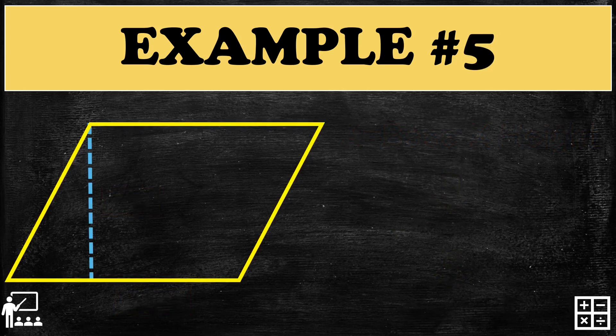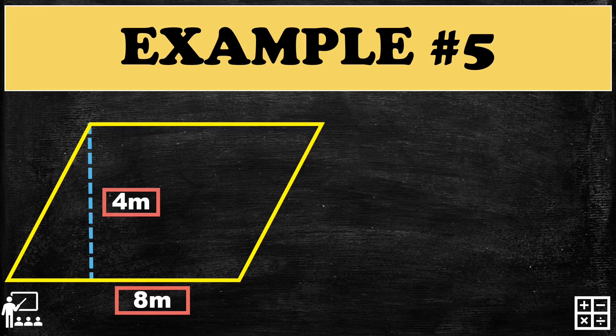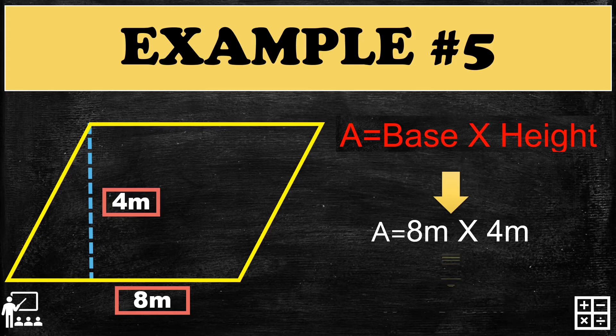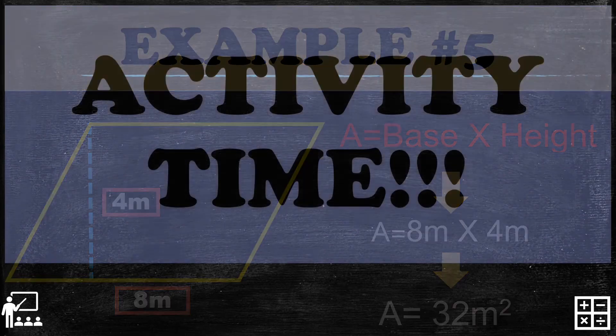Last example: a parallelogram with a base of 8 meters and a height of 4 meters. Using the formula and substituting, the base is 8 meters and the height is 4 meters. The answer for this example is 32 meters squared. Great job!